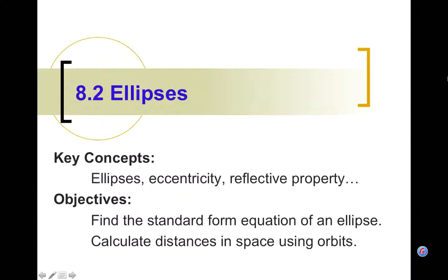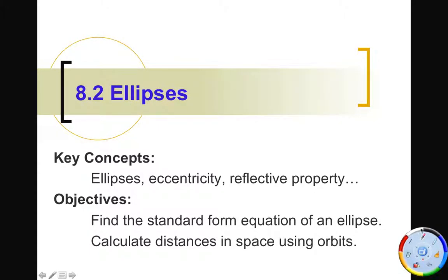Welcome ladies and gentlemen to section 8.2, the beginning of our studies of ellipses. Last study was on the parabola, and now our second conic section is the ellipse. We're going to be looking at the equations for ellipses, a new term called eccentricity, and another reflective property of ellipses — which is a pretty cool property. Let's go ahead and get into it.